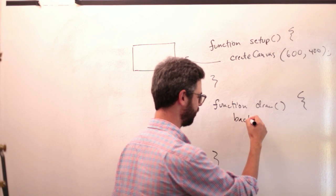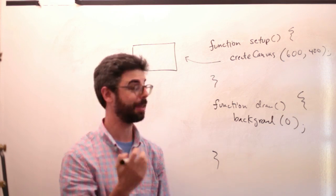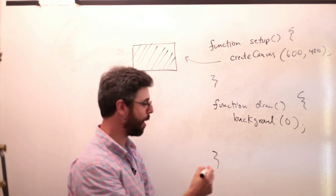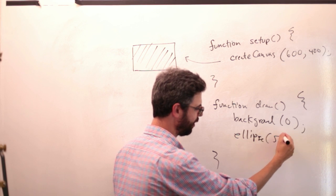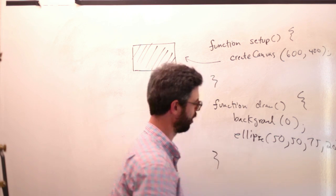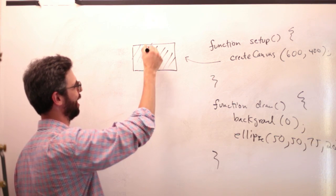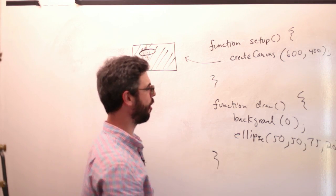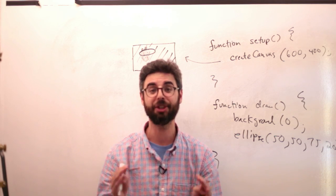Like background. Background zero will give you a black background. And then perhaps you might add something like ellipse — 50, 50, 75, 20. It's a weird looking ellipse, which would then look more like this. So this is what we've got so far. There's a setup block and a draw block, and both of those things are functions.